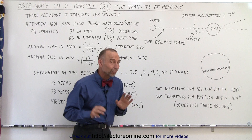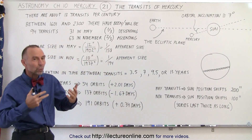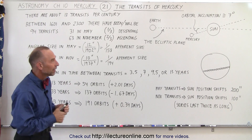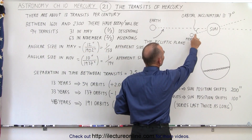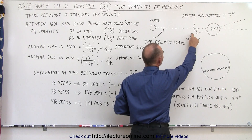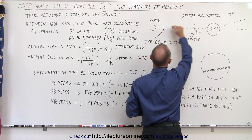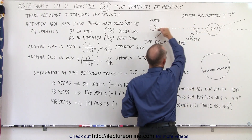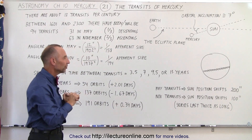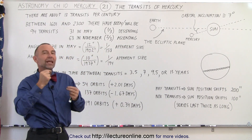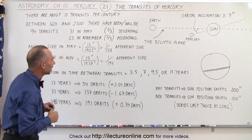This happens roughly 13 times per century. The reason it's fairly infrequent is because the orbital inclination of Mercury means that the planet doesn't very often find itself exactly on the ecliptic plane between the Earth and the sun. It does so at certain time intervals, related to the number of days it takes Mercury to travel around the sun.